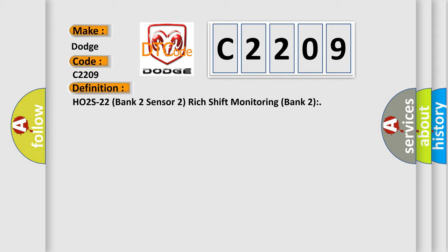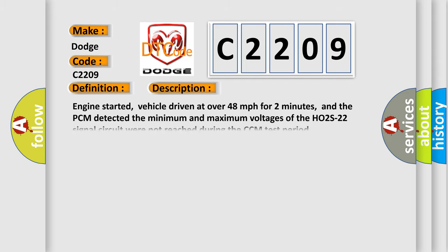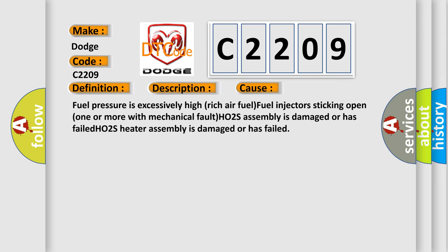Here is a short description of this DTC code. Engine started, vehicle driven at over 48 miles per hour for two minutes, and the PCM detected the minimum and maximum voltages of the HO2S22 signal circuit were not reached during the CCM test period. This diagnostic error occurs most often in these cases: fuel pressure is excessively high causing a rich air-fuel mixture, fuel injectors sticking open, one or more with a mechanical fault, HO2S assembly is damaged or has failed, or the HO2S heater assembly is damaged or has failed.